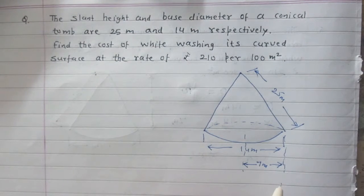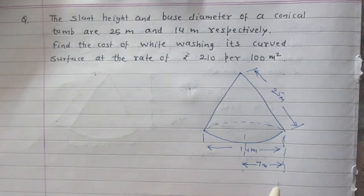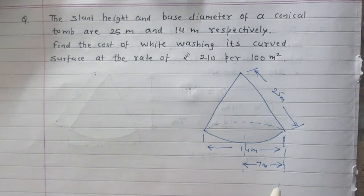We are to find cost of whitewashing its curved surface at the rate of Rs 210 per 100m². So let us consider curved surface area of this conical tomb.